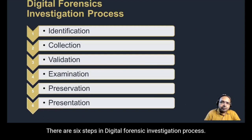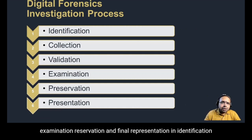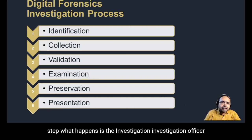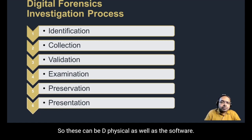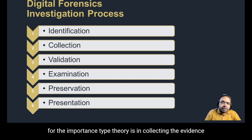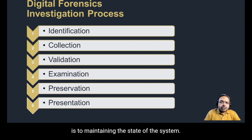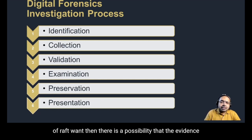There are six steps in the digital forensic investigation process: identification, collection, validation, examination, preservation, and finally presentation. In the identification step, the investigation officer visits the crime location and tries to identify the different objects which can be the source of evidence — these can be physical as well as software. If the system is on, live forensics may need to be performed. An important step in collecting evidence is maintaining the state of the system, because if you change the state — from on to off or off to on — the evidence may get lost, especially data stored in volatile memory.